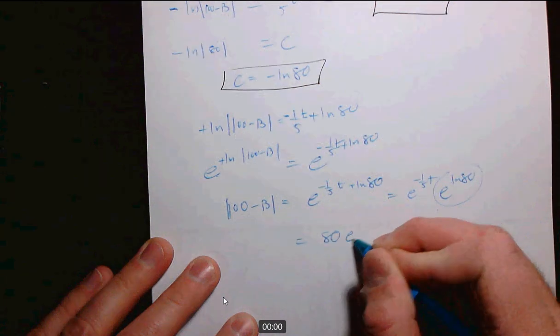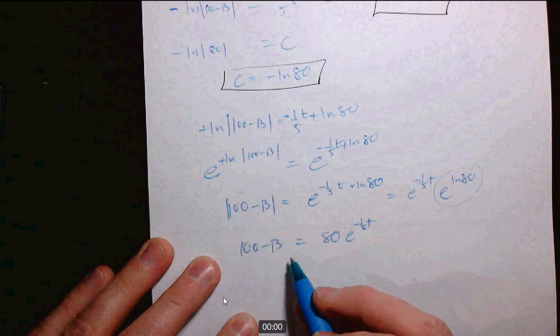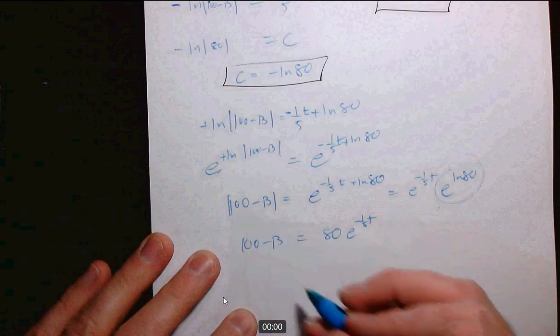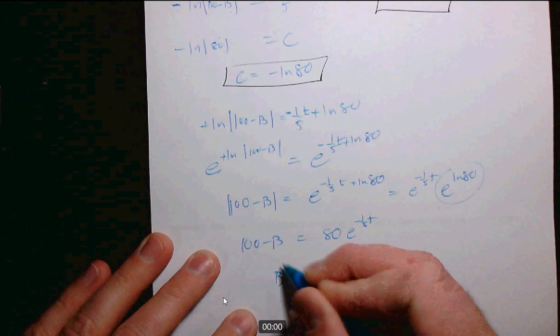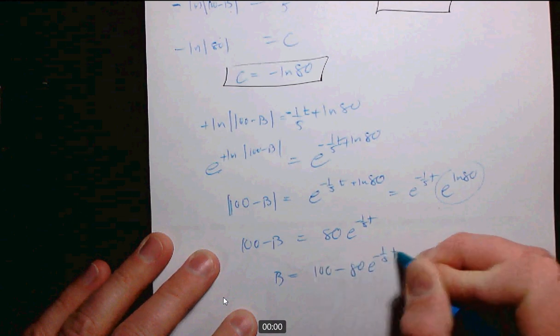100 minus B. Well, we know that B is less than 100 because the weight of the bird is less than 100. So we can drop the absolute value bars. And then we can just solve that B is 100 minus 80 e to the negative 1/5 T.